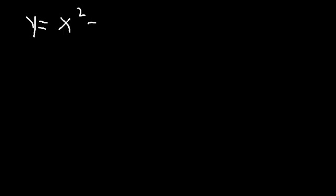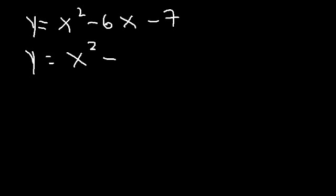Now let's say we have an equation in standard form: y is equal to x squared minus 6x minus 7. Using the completing the square technique, the first thing you want to do is write the first two terms, x squared minus 6x. Then consider this number, negative 6. Take half of that number and square it. Half of 6 is 3, and 3 squared is 9. I'm going to write it as 3 squared instead of 9 for now.